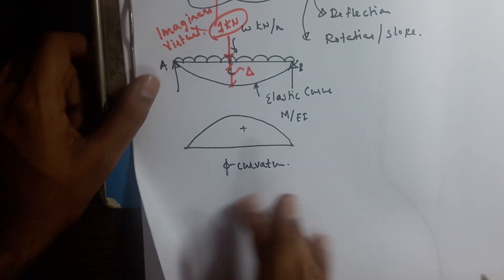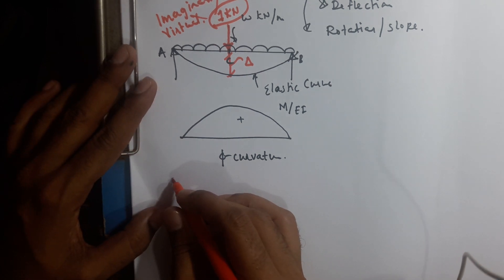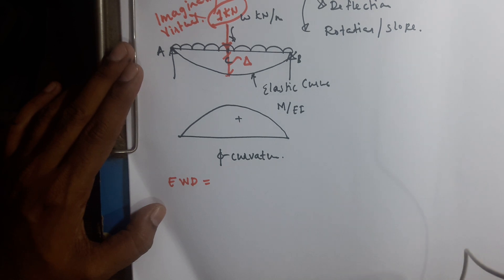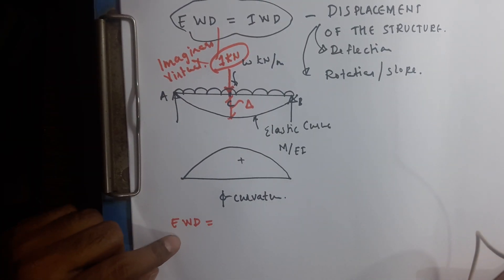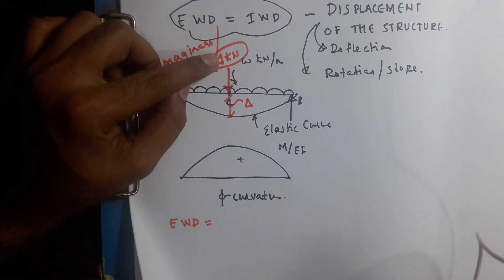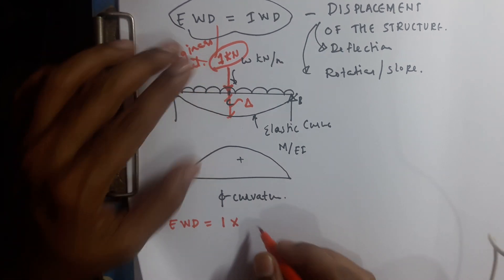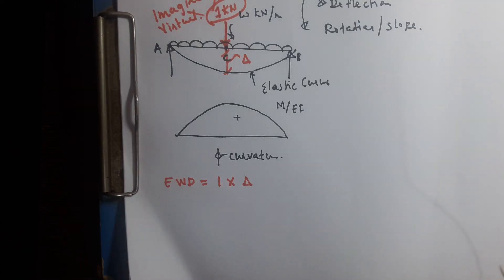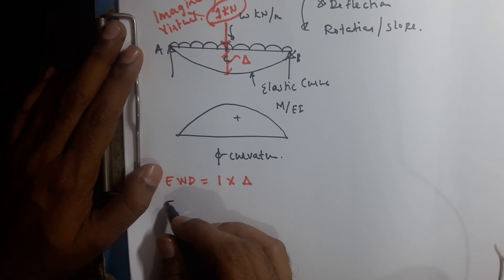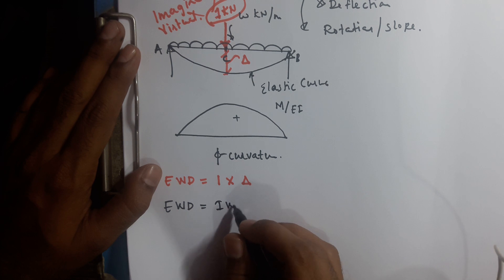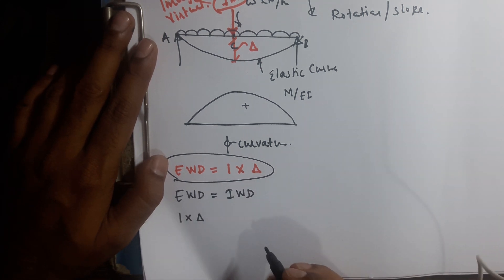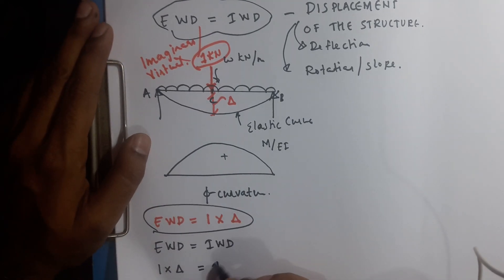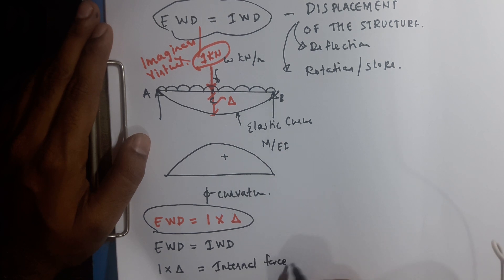We are applying a unit load and we can now write down external work done. Work done is the product of force and displacement. External work done means: force — 1 kilonewton — into displacement delta. From the law of conservation of energy, external work done equals internal work done. External work done is 1 × delta, and internal work done means internal force into internal displacement.